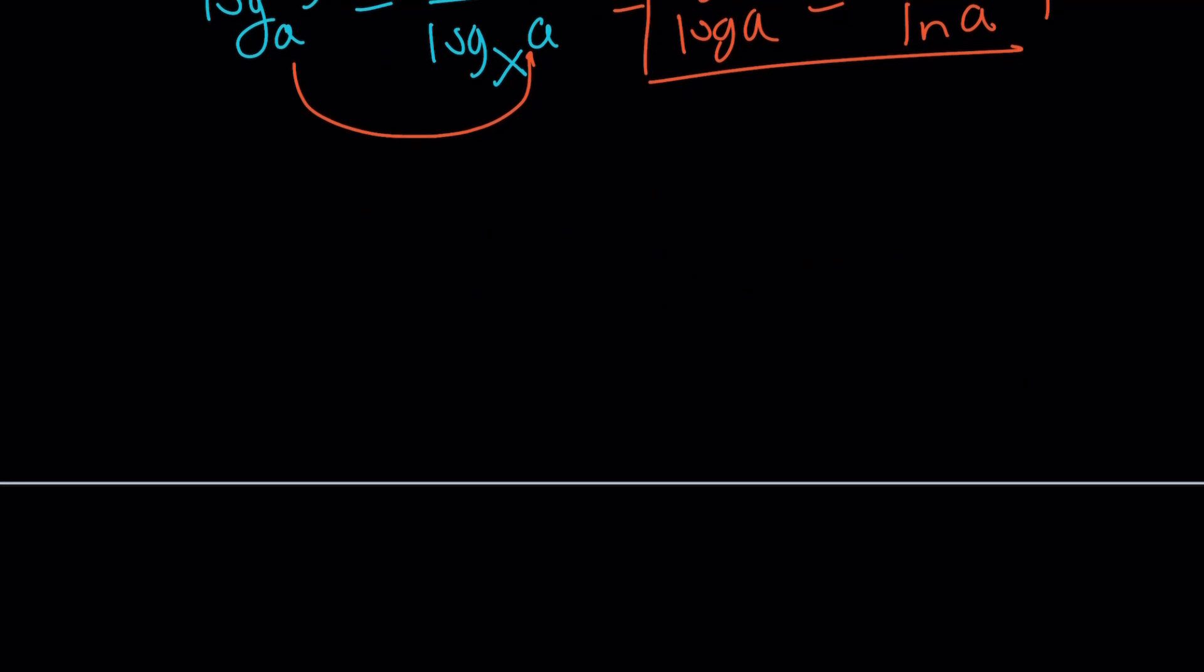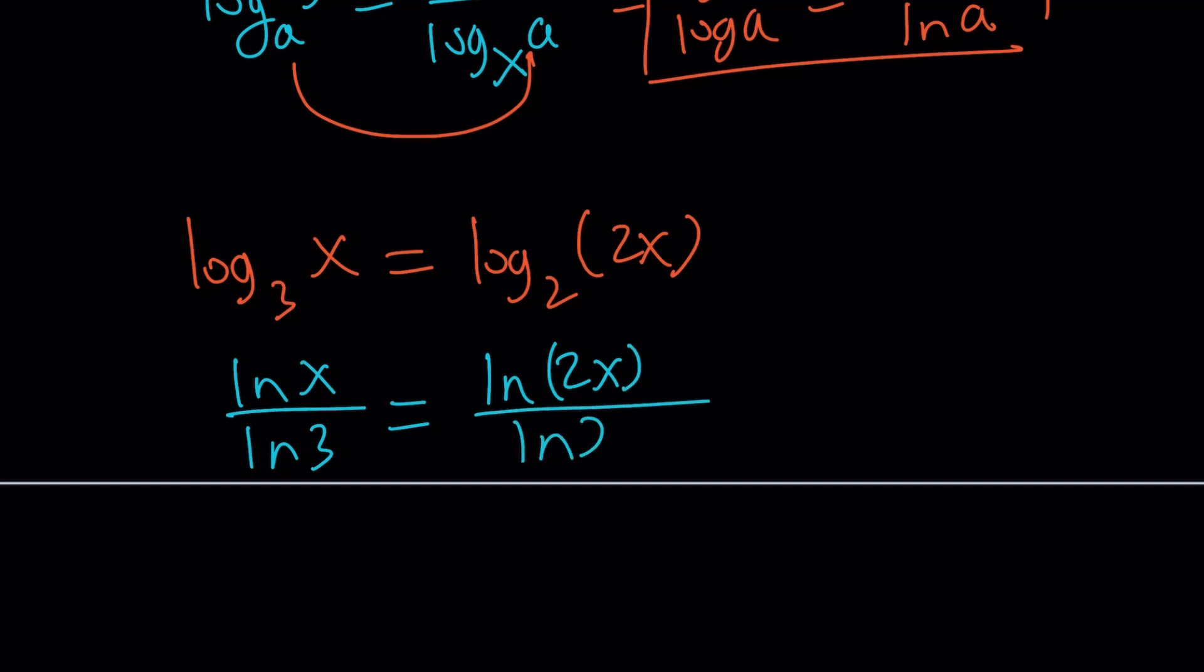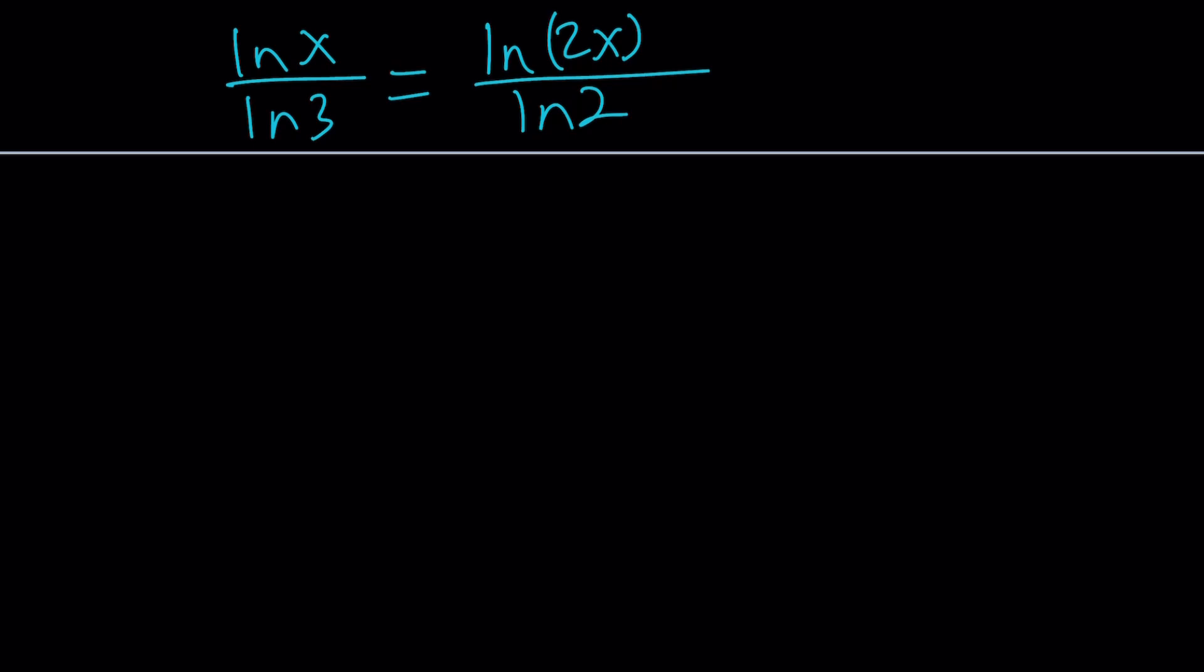Let's see if we can find the same answer using the second method. You have different bases, so change of base would be perfect for this problem. Let's change the base to Euler's number, which will be ln. So how do we write it? ln(x) over ln(3) equals ln(2x) over ln(2). You put this on top and this at the bottom. But how do we solve for x from here? Cross multiply. ln(x) times ln(2) equals ln(3) times ln(2x).